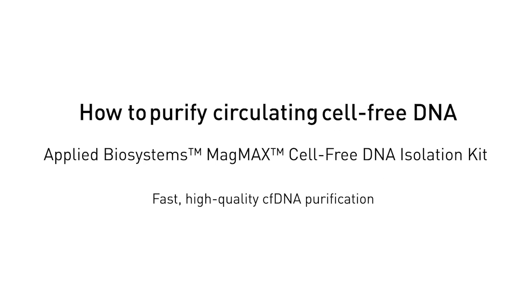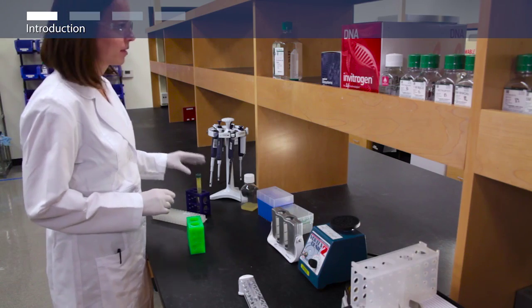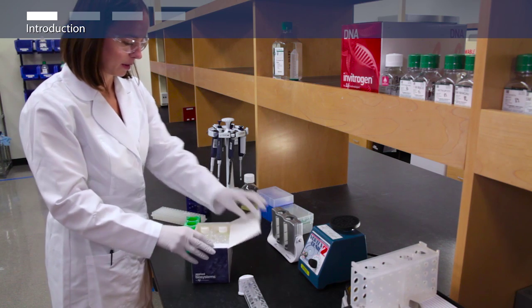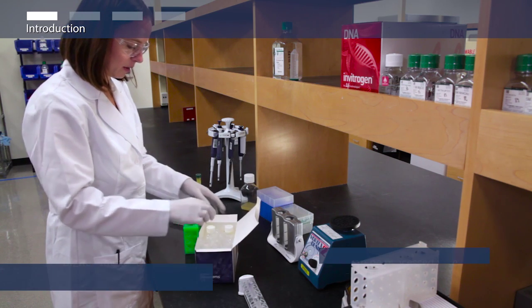This video describes both manual and automated purification of circulating cell-free DNA from plasma samples. The MagMax Cell-Free DNA Isolation Kit may also be used to isolate cell-free DNA from serum and urine.